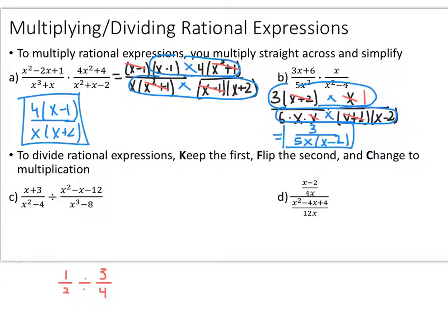For dividing rational expressions, it's the same as dividing regular fractions: keep the first fraction the same, flip the second and change to multiplication. Dividing 1 half divided by 3 fourths: keep the 1 half, flip the second fraction to 4 over 3 and multiply. Cancel a set of 2s in numerator and denominator, multiply straight across — 1 times 2 is 2, 1 times 3 is 3 — giving you 2 thirds.